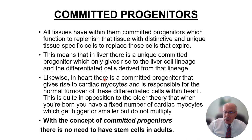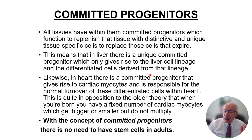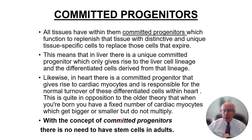Those committed progenitors are the replacement parts for the turnover of each of your tissues. Within all tissues, there are committed progenitors which furnish and replenish the tissue with distinctive, unique tissue-specific differentiated cells that replace those cells which die. That means liver, heart, and kidney all have committed progenitors. Once you recognize this complete idea — committed progenitors in every single tissue, skin included — you don't need stem cells. A keratinocyte stem cell in skin can never differentiate into nerve or liver. It's not a stem cell.